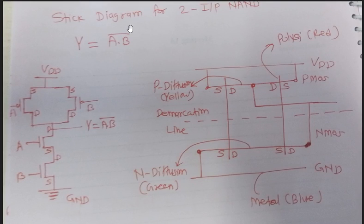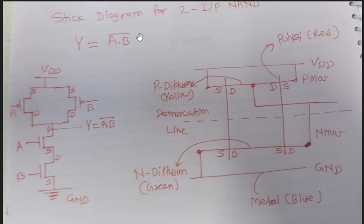Today we will discuss the stick diagram for a two-input NAND gate. For a two-input NAND gate, the boolean expression is Y = AB̄ (A AND B, whole bar). First we have to do the CMOS implementation for this expression.